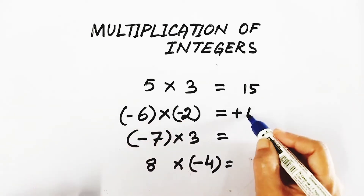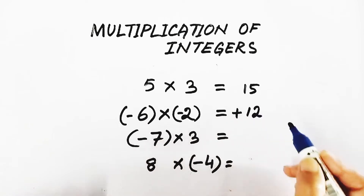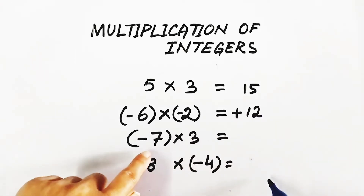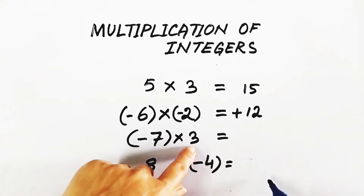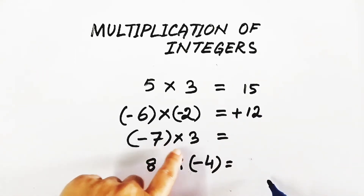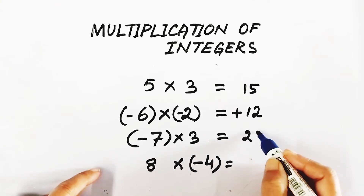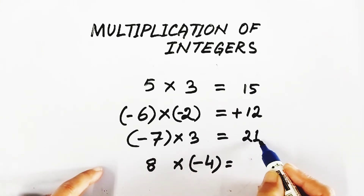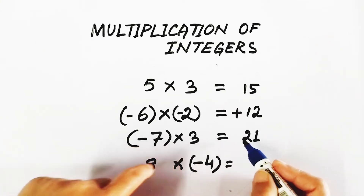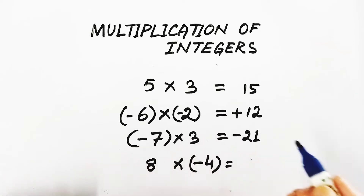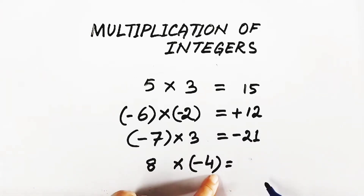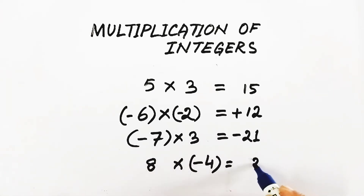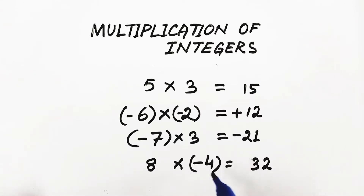Here, one is negative and another is positive: 7 threes are 21, but since one is negative and another is positive, the sign should be negative. Here also, 8 fours are 32. First you multiply the absolute values, then determine the sign — positive and negative gives a negative result, so it is negative 32.